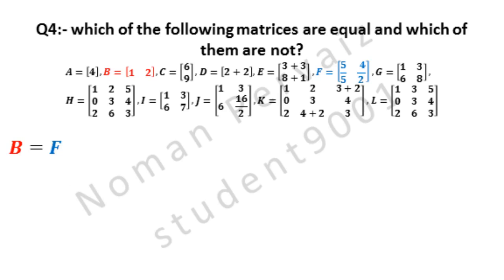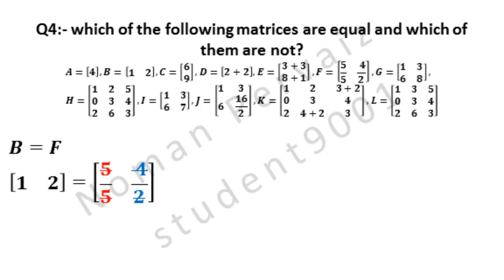Matrices B and F are equal. The value of matrix B is 1 and 2 as represented by red color. And the value of matrix F is 5 by 5 and 4 by 2 as represented by blue color. 5 and 5 are cancelled, 2 and 4 are cancelled. 2 ones are 2 and 2 twos are 4. 5 is cancelled by 5 so we write 1, then 2 is written. Since the values and orders of both matrices are same, both are equal.